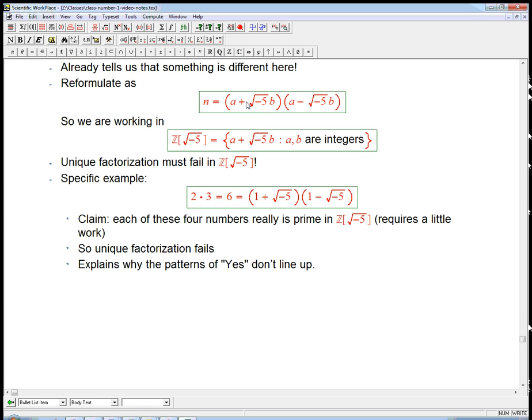I must have written this much earlier. If it's n equals a squared plus b squared, then I can write it in this way, a plus root minus 5b times a minus root minus 5b.